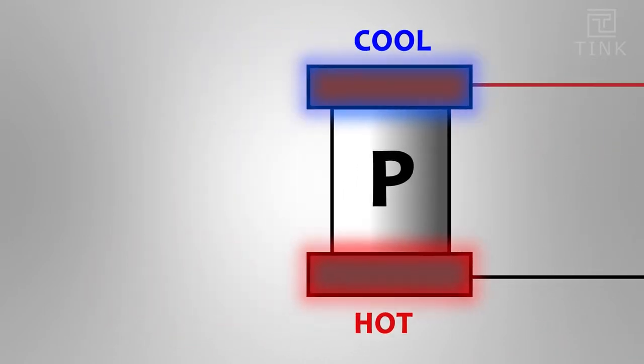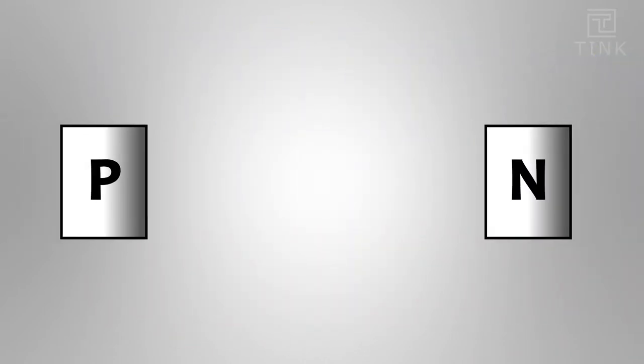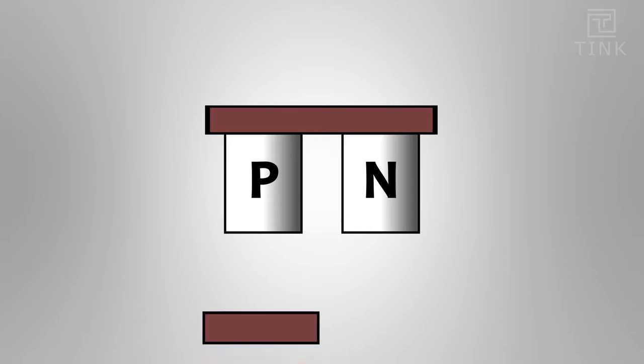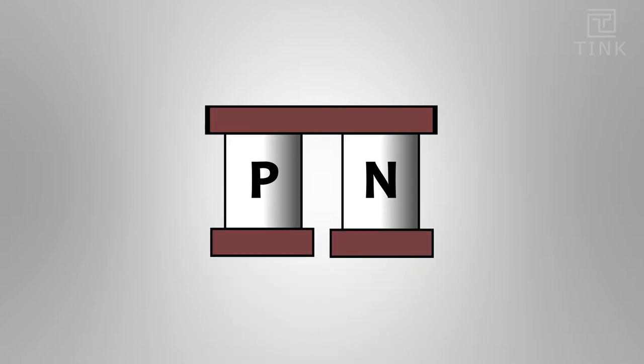Now let's arrange the P and N type materials in a specific manner. Here we got the P type and N type pellet. We need two dissimilar materials for the Peltier effect to take place. We got the semiconductor material. For the other material let's place the copper contact on top of the semiconductors connecting both the materials. Now let's make a different arrangement at the bottom by placing another two copper contacts for each of the semiconductor pellet.